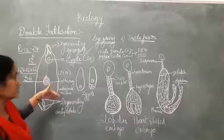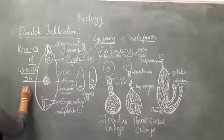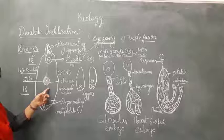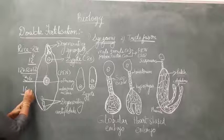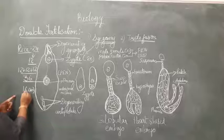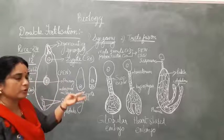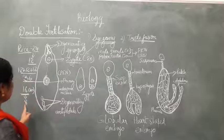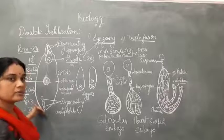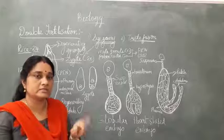Similarly, if maize has 16 diploid chromosomes, the haploid number is 8. Three haploid nuclei fuse (two polar nuclei + one male gamete), so 8 × 3 = 24 chromosomes in the primary endosperm nucleus. It is very important to learn the ploidy of each cell in the embryo sac: microspore mother cell is diploid, megaspore mother cell is diploid, male gametes are haploid, egg cell is haploid, synergids are haploid, and antipodals are haploid.